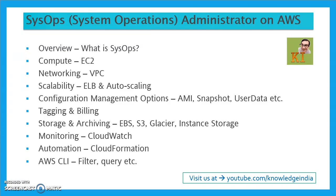The next big area is storage. We clearly need to understand the different types of EBS volumes and the differences between EBS, S3, Glacier, and instance storage — and at what time to use which storage option. There is already a video tutorial on the channel covering EBS, S3, and EFS. Another tutorial going deeper into various features of S3 is coming, and we'll also compare instance storage with EBS.